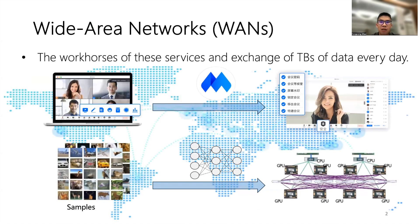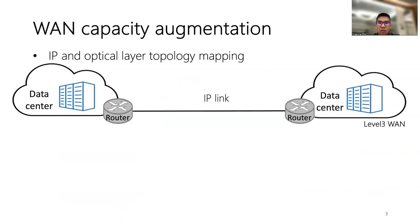Traffic demands on cloud wide area networks are growing rapidly, driven by emerging applications. For example, during COVID, the WAN supports the Tencent Meeting application to connect billions of people across the world. The recent popular AI model training workload leads to rapid growth of data center to data center traffic, which also requires WAN for inter-data center connection.